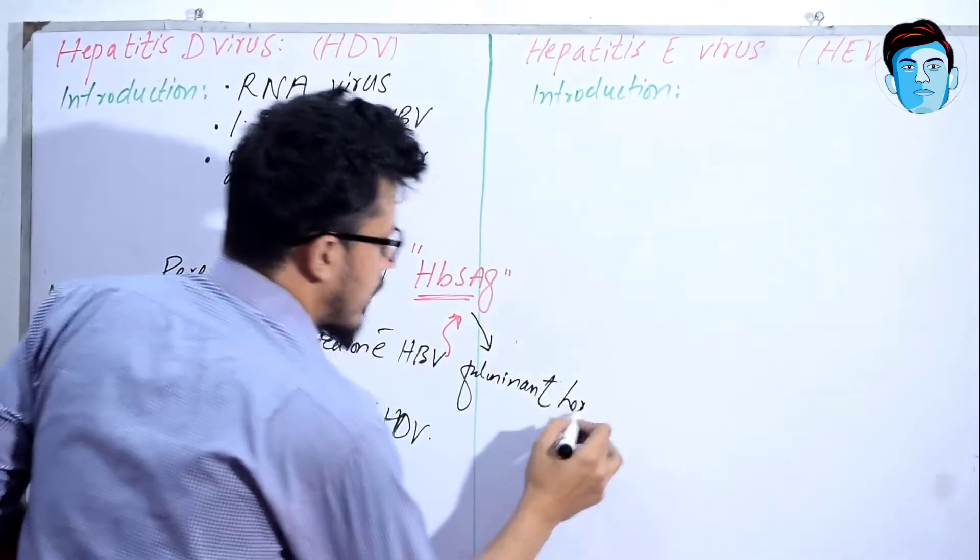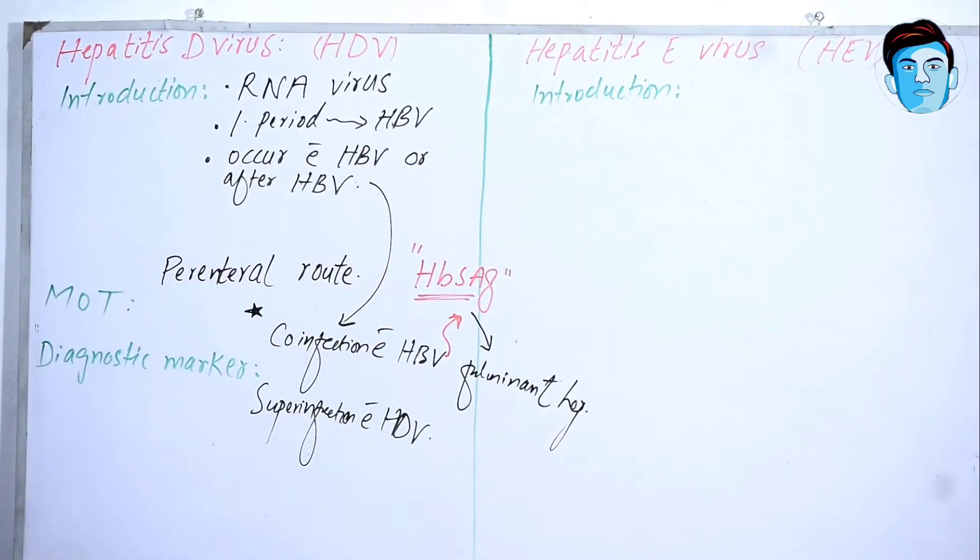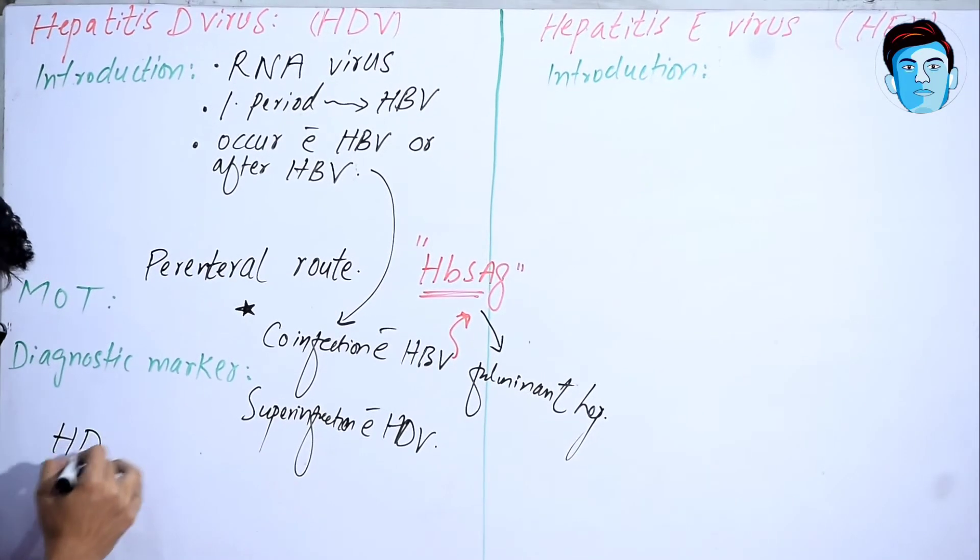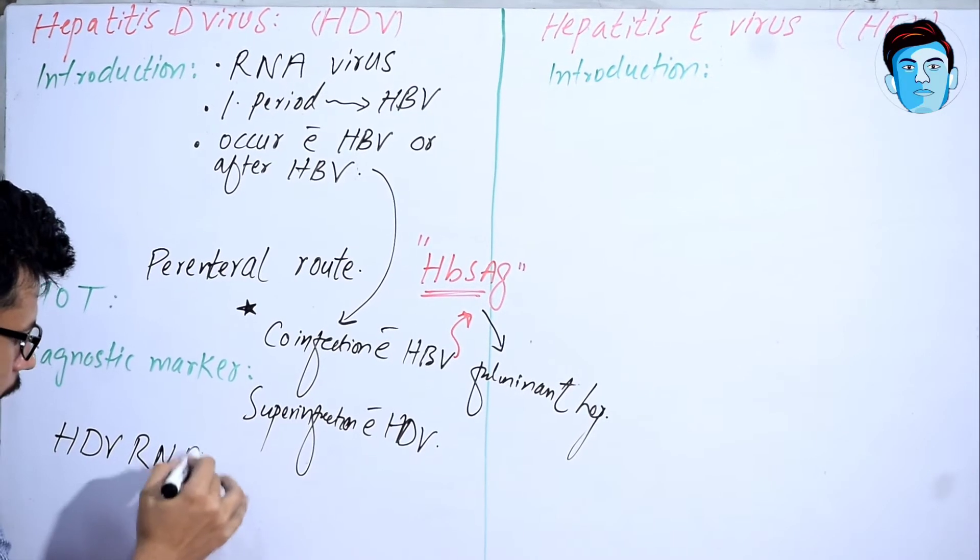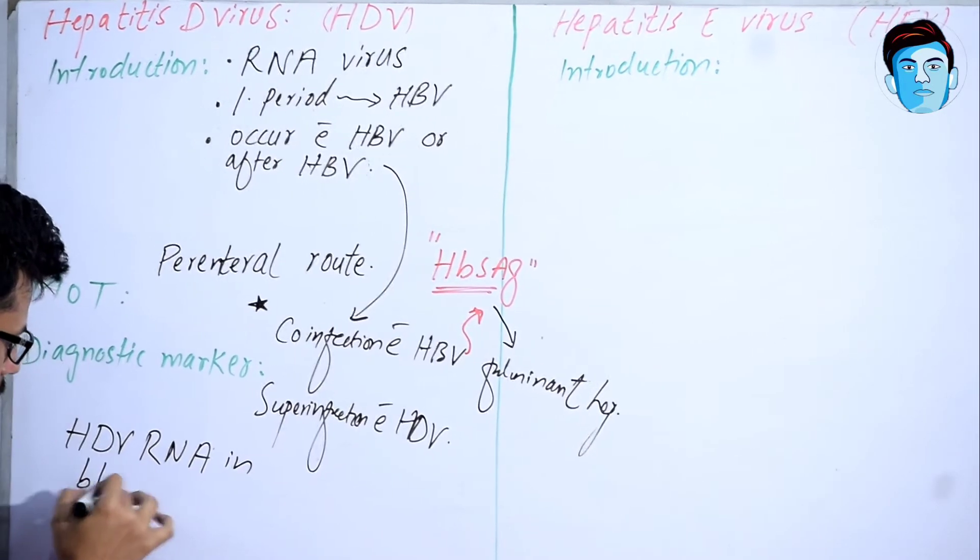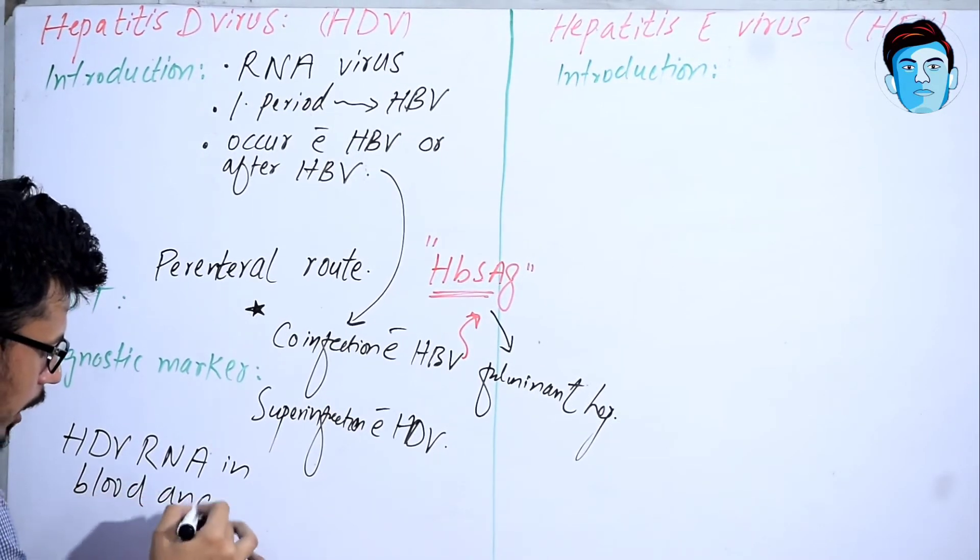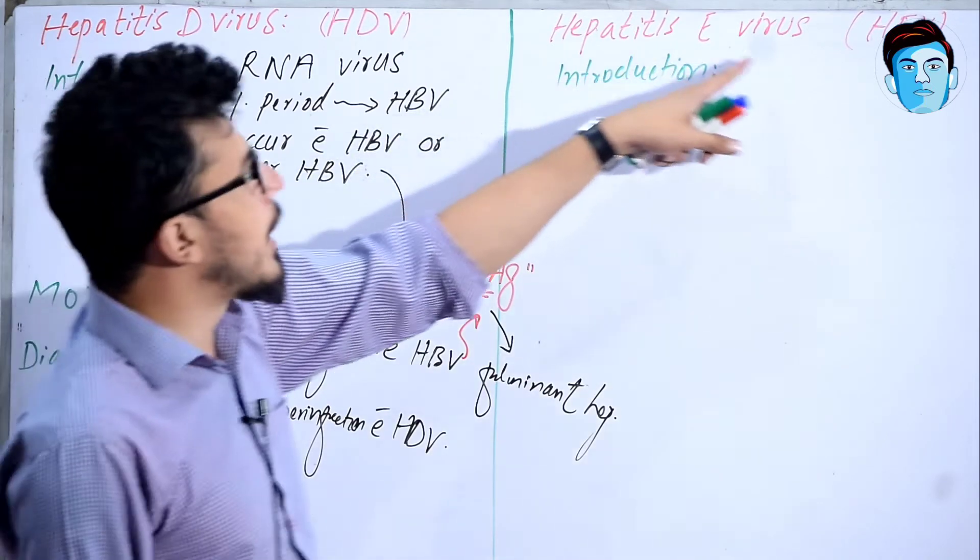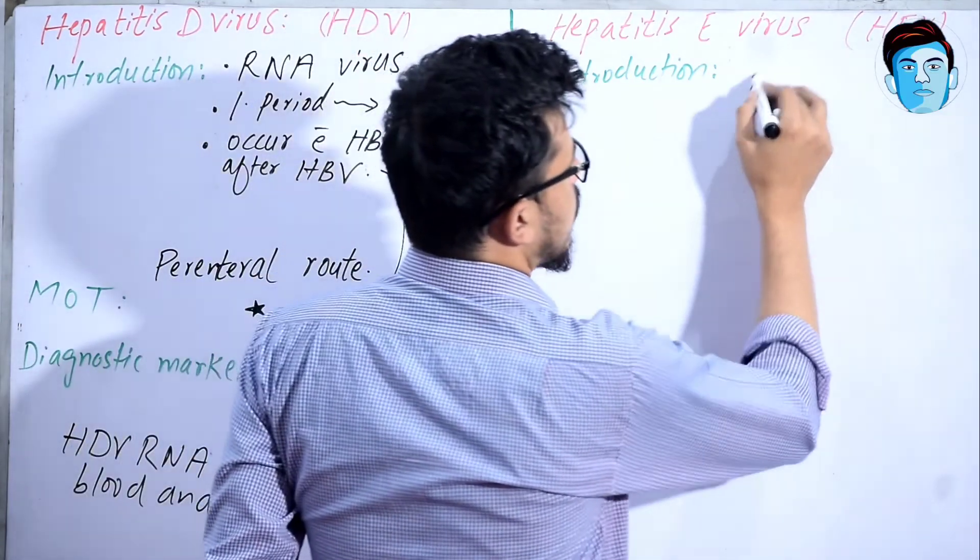It will lead to fulminant hepatitis. The diagnostic marker for it is Hepatitis D virus RNA in blood and liver. Now let's talk about Hepatitis E virus. Hepatitis E virus is also an RNA virus.